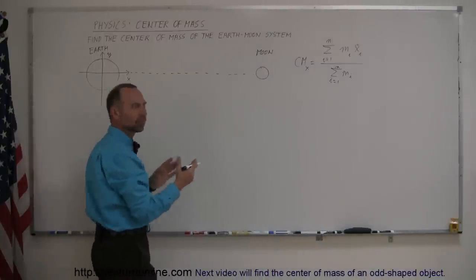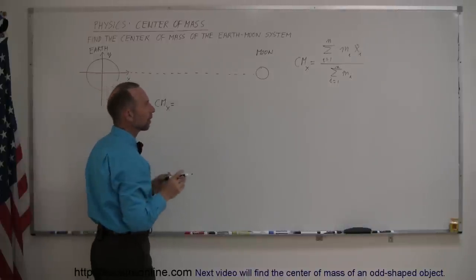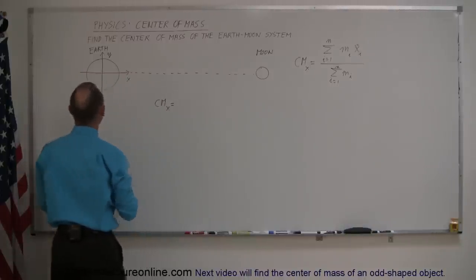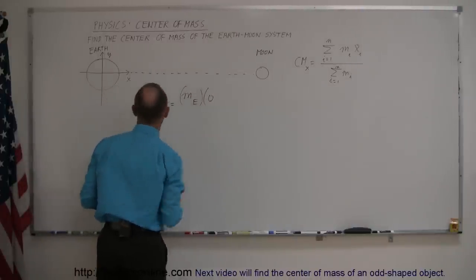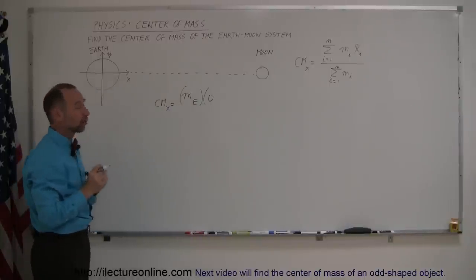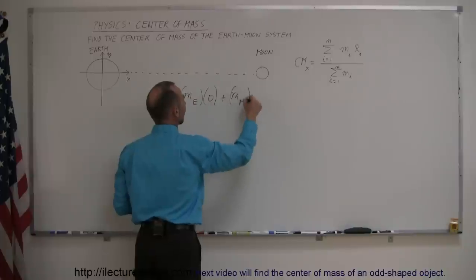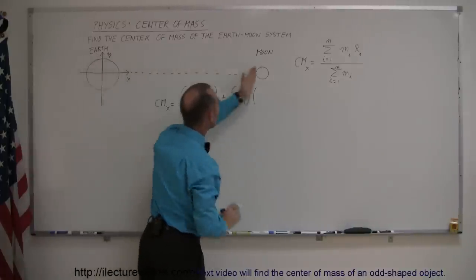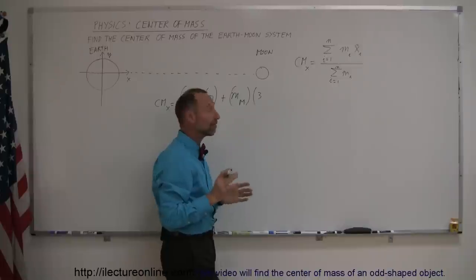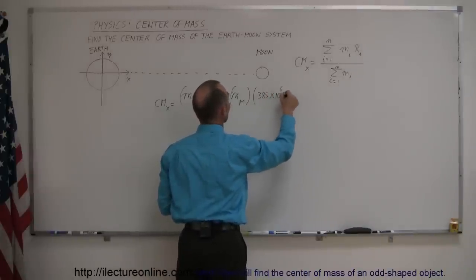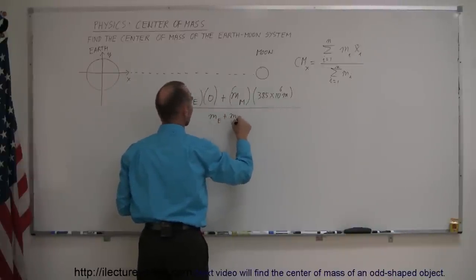Now we go ahead and plug in. The center of mass in the X-direction equals the product of the masses times their X-coordinates. So: mass of the Earth times zero — because the Earth is placed right at the origin, so there's no X-coordinate — plus the mass of the Moon multiplied times the distance from the Earth to the Moon in the X-direction, which happens to be 385,000 kilometers, or 385×10⁶ meters. Divide that by the mass of the Earth plus the mass of the Moon.